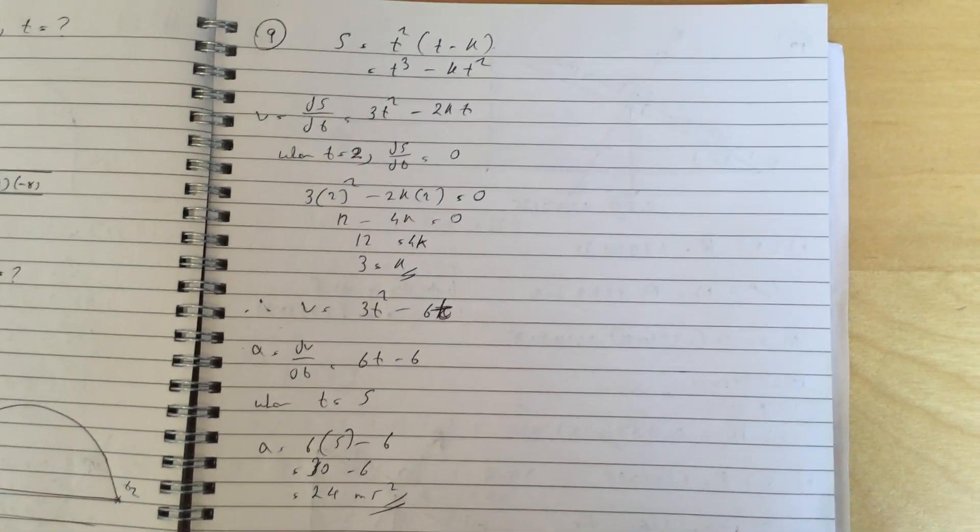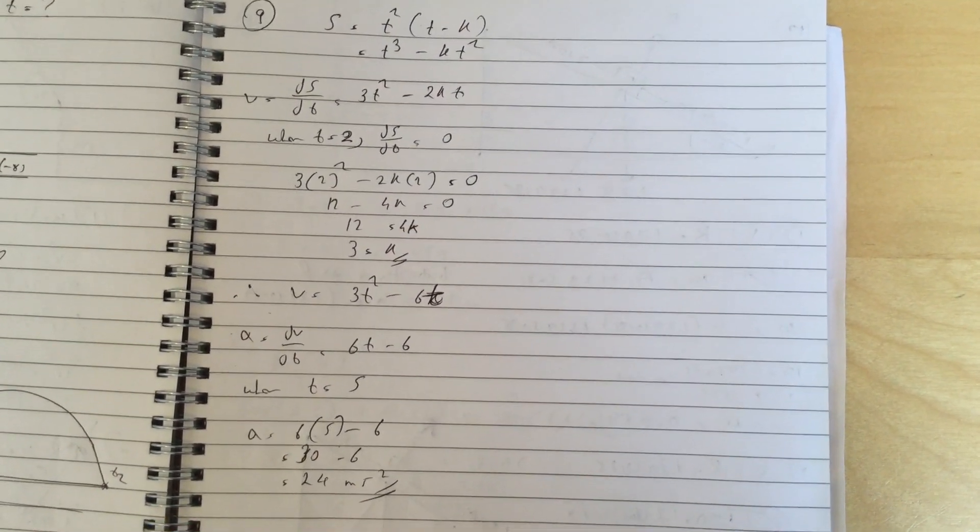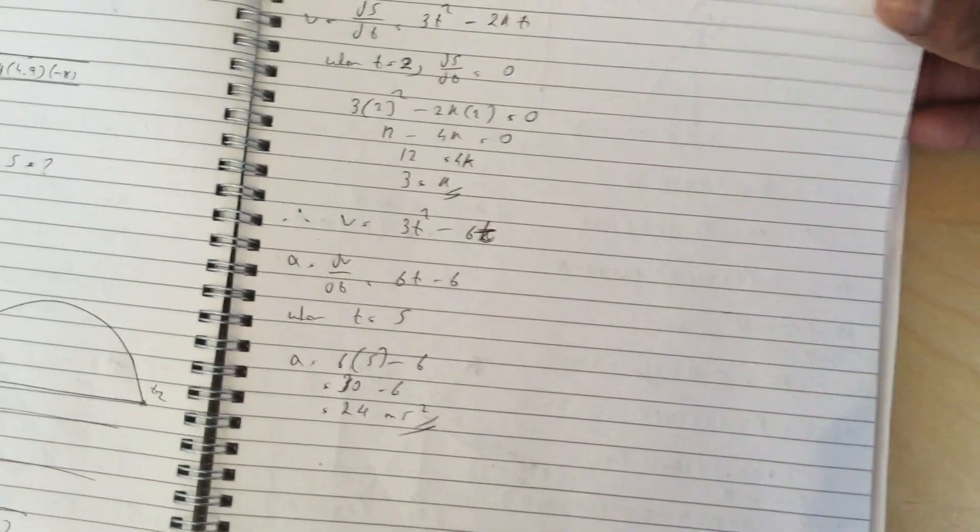And then you do a, which is 6t minus 6, and when t equals to 5, a is equal to 24 meters per second squared. That is question 9.